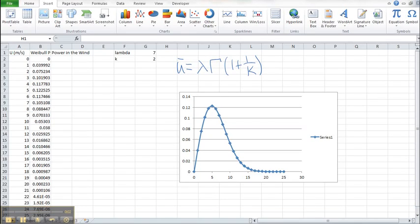Now I'm going to build off of the Weibull curve that we've just put together in Excel, and we're going to look at the power in the wind. We're going to compare the power in the wind from just using an annual average wind speed versus using the power in the wind using the wind distribution.